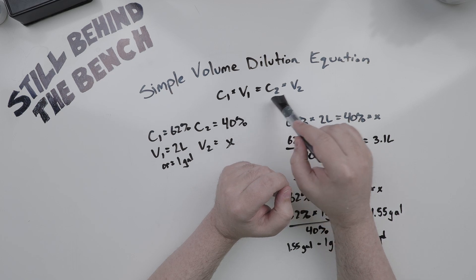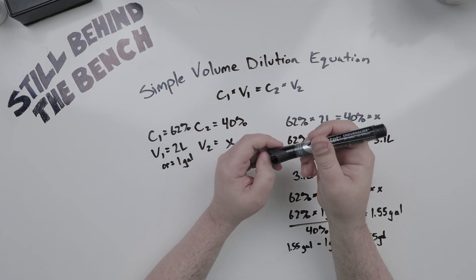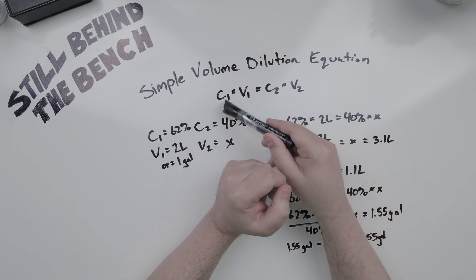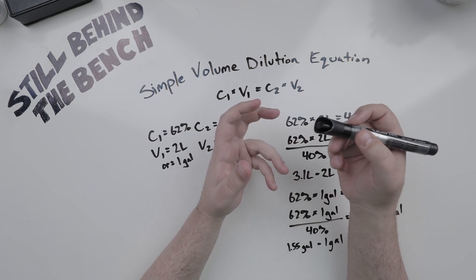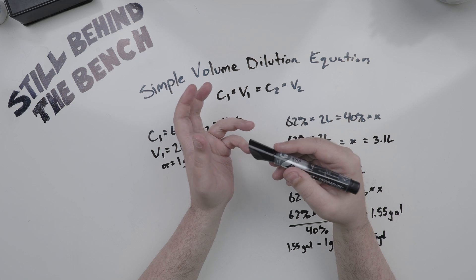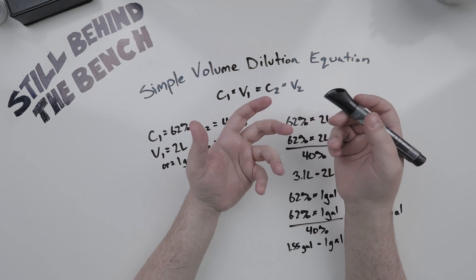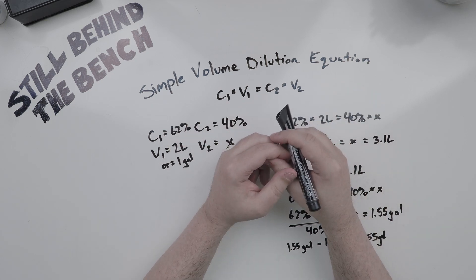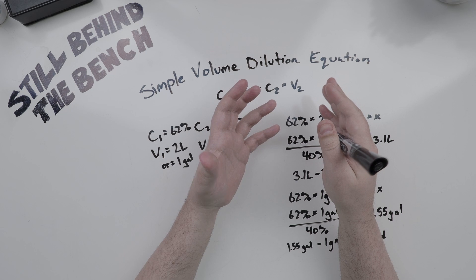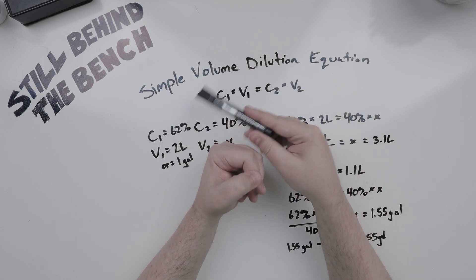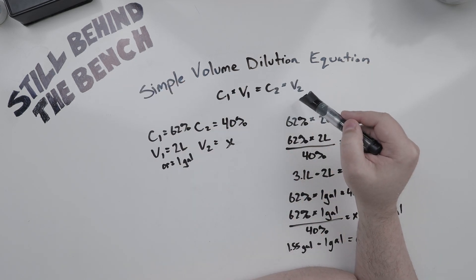So the first is the simple volume dilution equation: C1 times V1 equals C2 times V2. What does this mean? C1 is your initial concentration, V1 is your initial volume, C2 is the final concentration, and V2 is the final volume.